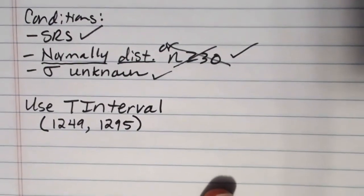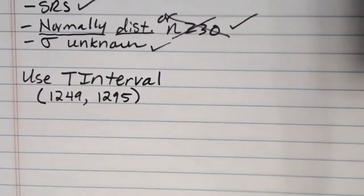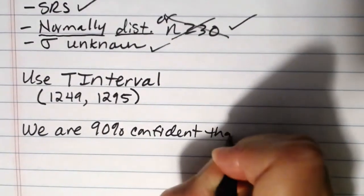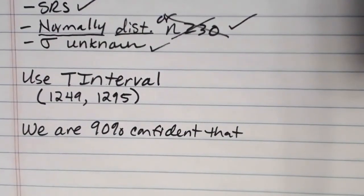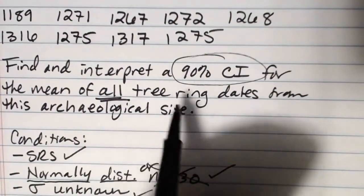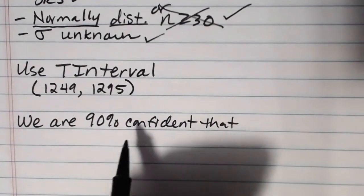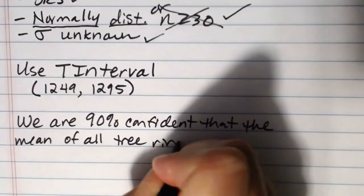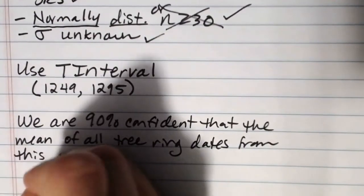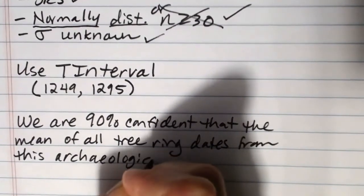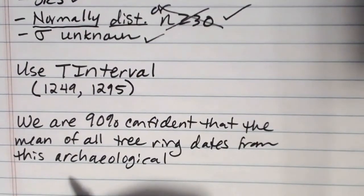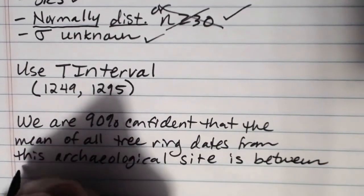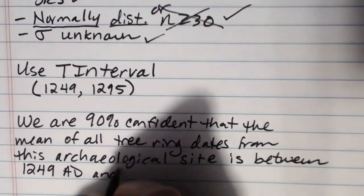And then when we interpret that piece, again, our interpretation really should have three chunks. The first chunk you talk about how confident you were. So we are 90% confident that. Then you talk about what it was that you estimated. And what we were estimating was the mean of all tree ring dates from this archaeological site. So we are 90% confident that the mean of all tree ring dates from this archaeological site. And then you talk about what your endpoints were.